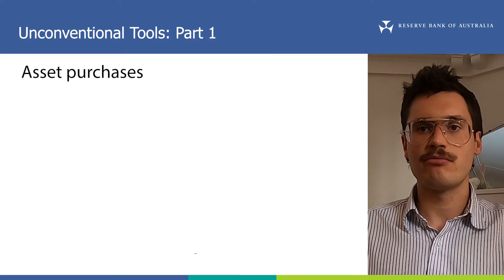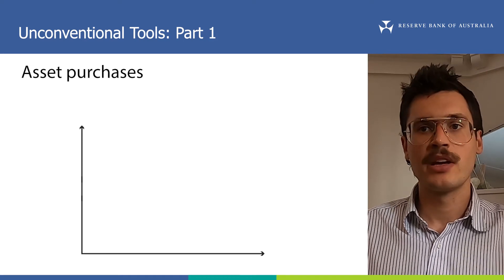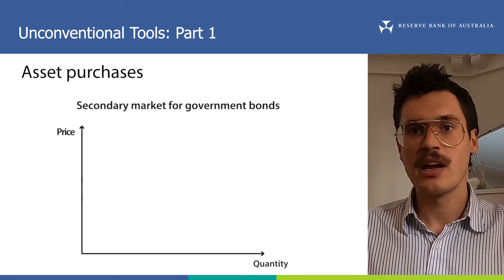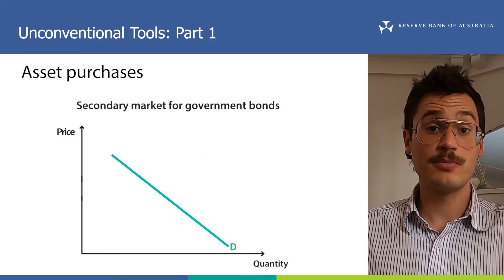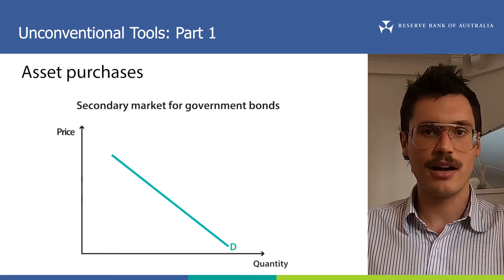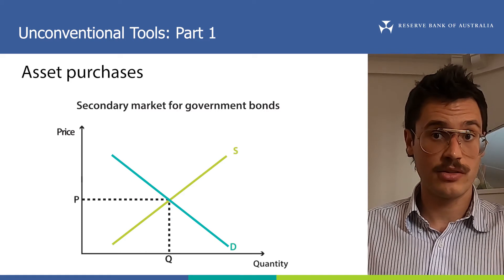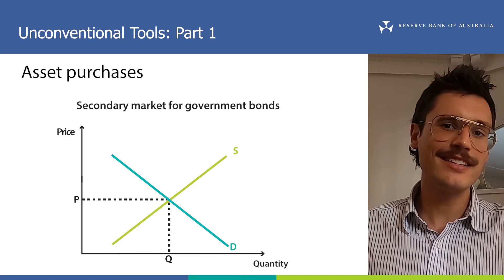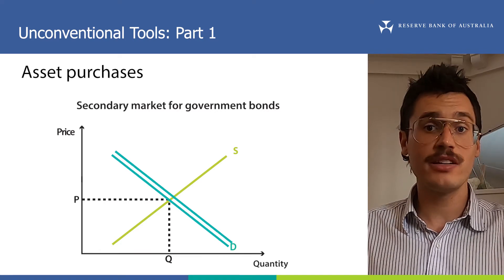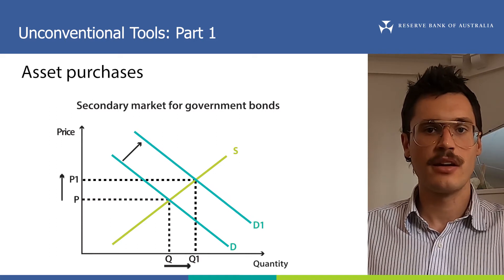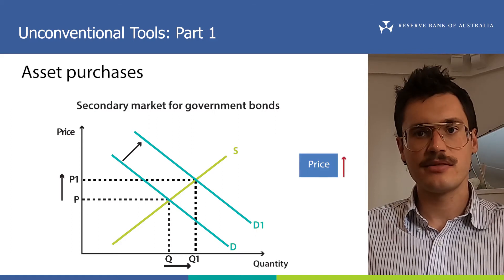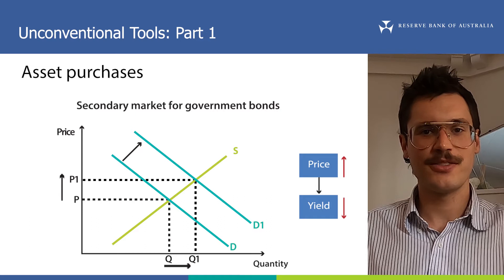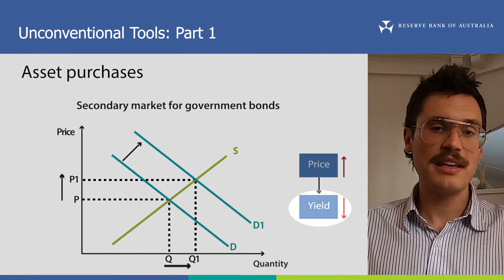So what happens when the RBA purchases a government bond? Let's think about that using a demand and supply framework. Here is the secondary market for government bonds, with the quantity of bonds traded on the x-axis and the market price on the y-axis. The blue line is the demand for government bonds, and it slopes down because participants in the market will want to purchase fewer bonds at a higher price. The green line is the supply of government bonds, and it slopes up because owners of bonds will want to sell more of them if the price is higher. If the RBA purchases government bonds, it adds to demand for them in the secondary market, shifting the demand line from D to D1. As the demand for government bonds increases, so does their price, and as a result their yield falls. So the result of the RBA purchasing government bonds is lower government bond yields.